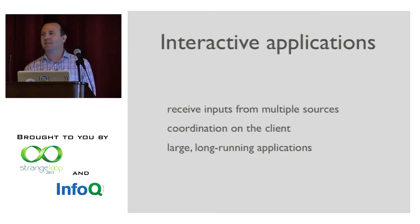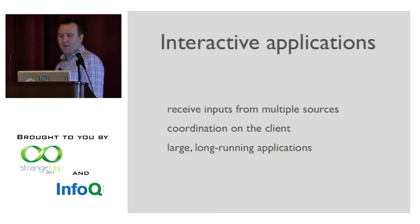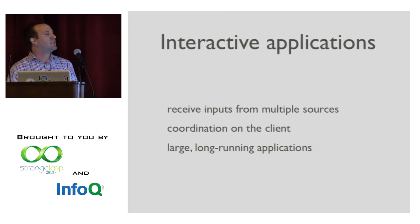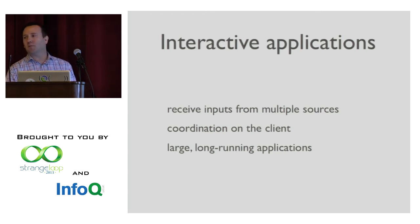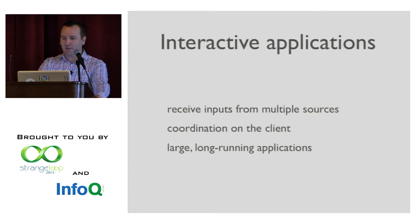We receive inputs and events from multiple sources, and we need to coordinate all this information into a coherent picture and display it reasonably to the user. This requires that we do coordination on the client that we used to just do on the server. When we do this on the server, we have a database and we do all our coordination there. When we have a lot of state and events coming into the client, we need something to play that role. These applications run for a long time, they're larger from a code perspective, and we need to apply real engineering effort to make sure they run well.